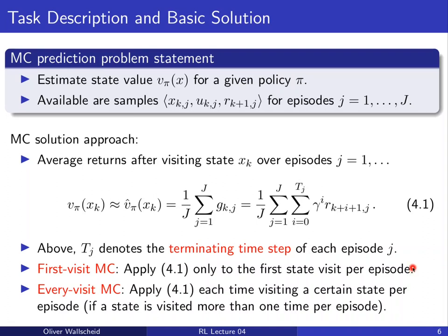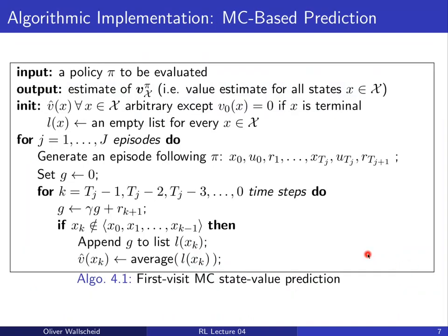Let's look at first-visit Monte Carlo prediction in pseudocode. Input is our policy π to be evaluated; output is estimates of all state values in the state space. Initialization: set arbitrary starting points for state values (terminal states initialized to 0), and initialize an empty list L for every state to store sampled returns. We roll out episodes 1 to J, and in every episode generate a sequence of state-action-reward tuples following policy π until termination.